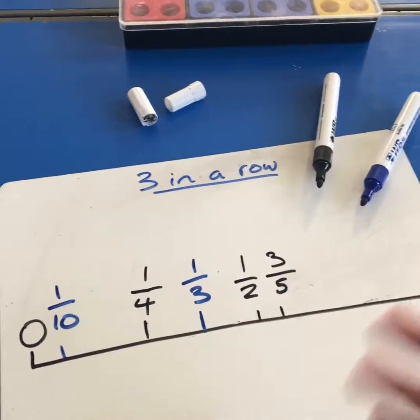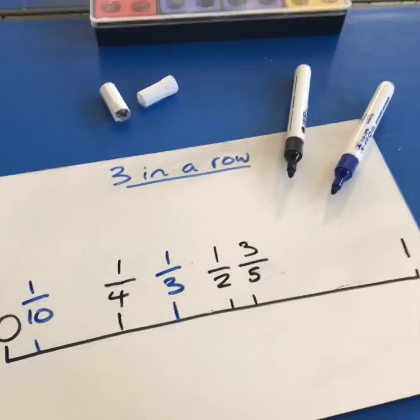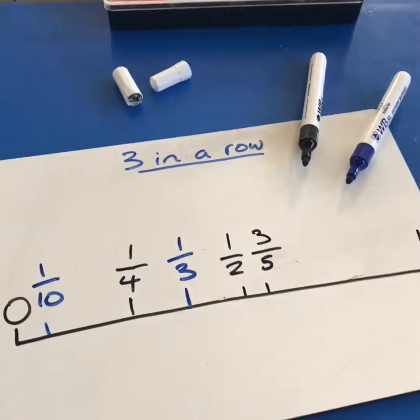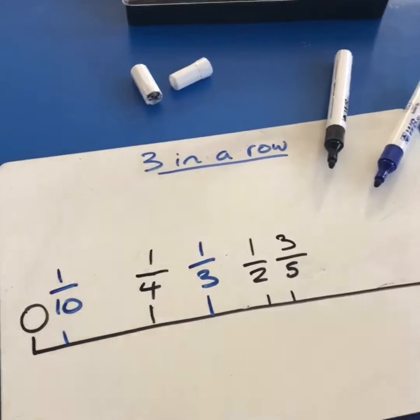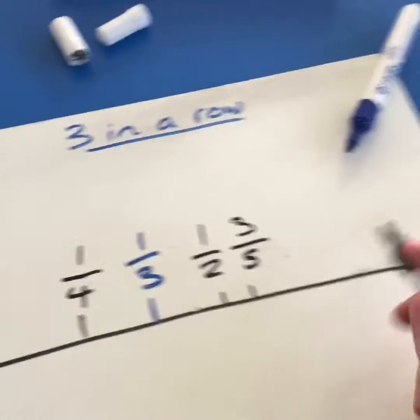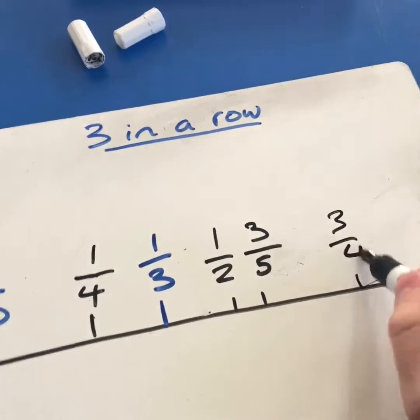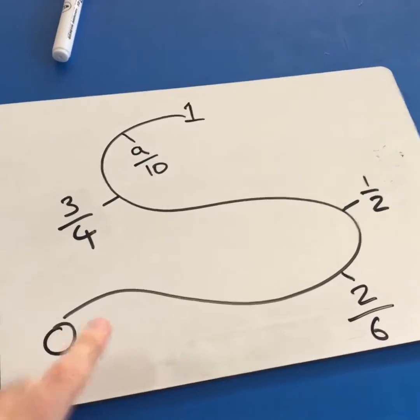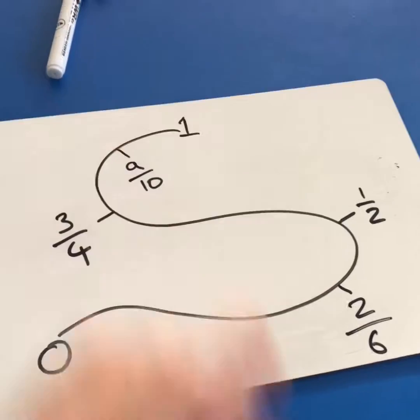You can actually play a really cool game called three in a row, where partners take turns to put fractions on the line and they have to try and get three fractions in a row. Hey look! I can win! Woohoo! You can really challenge learners by making a wonky line.